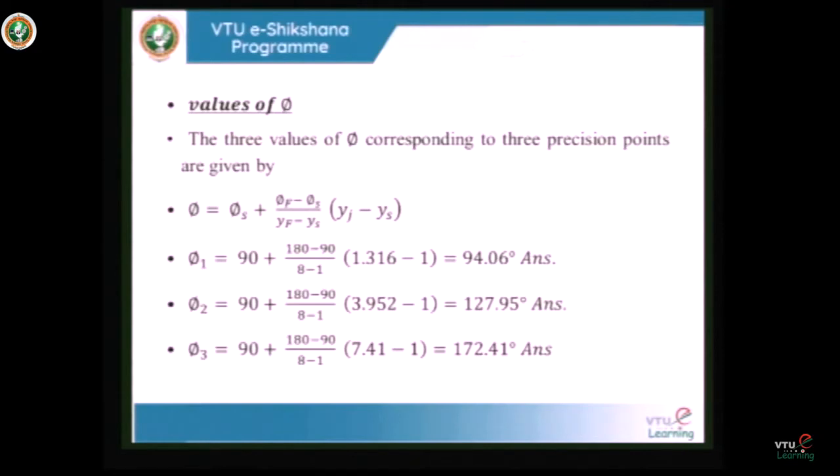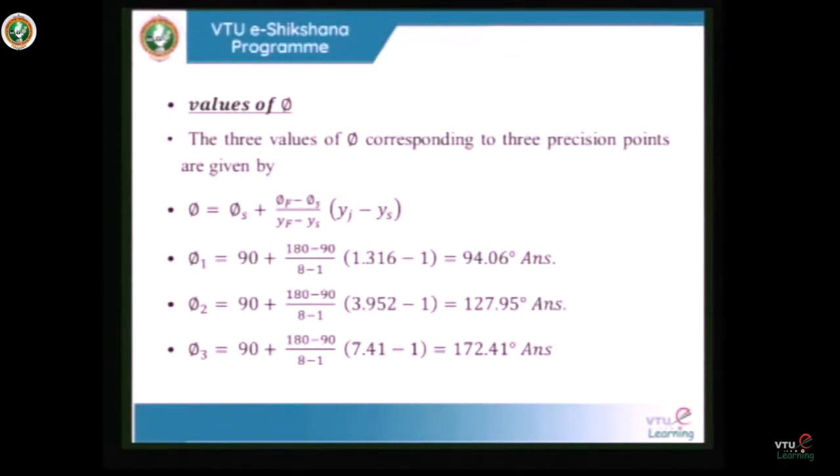This is about function generation. The function we generate will agree only at a few points, termed precision points. The function is generated to obtain the desired output, but the actual output is completely different from the desired output everywhere else. The difference between the actual output and the desired output is known as dimensional error. At precision points, the dimensional error is zero, so we solve at precision points to find the positions.